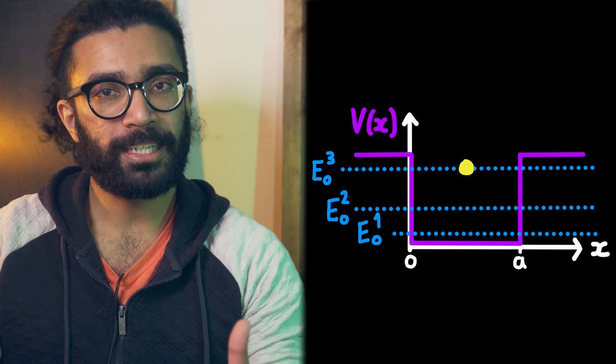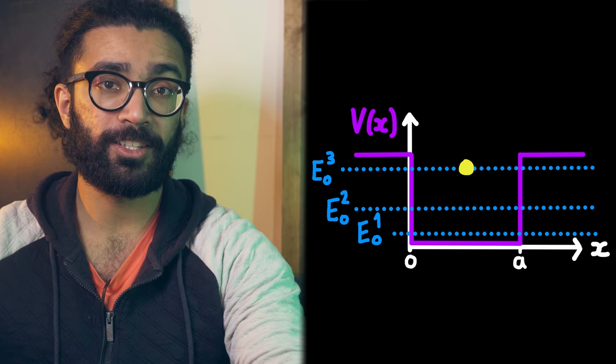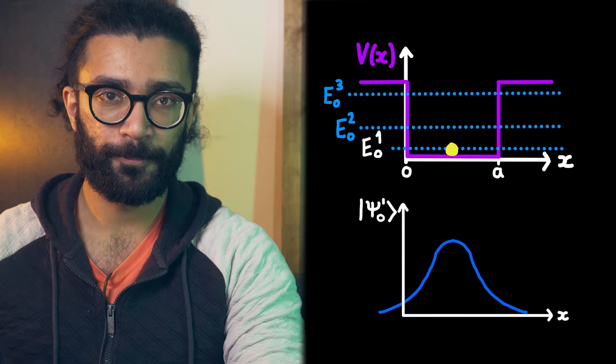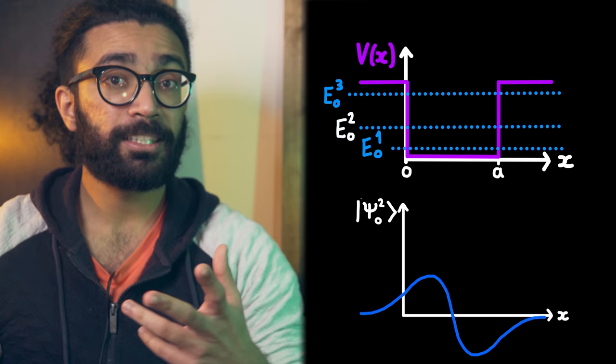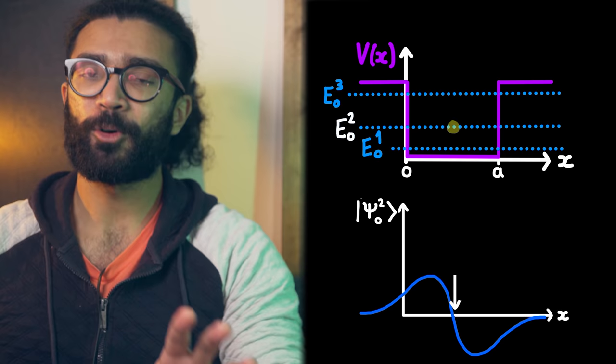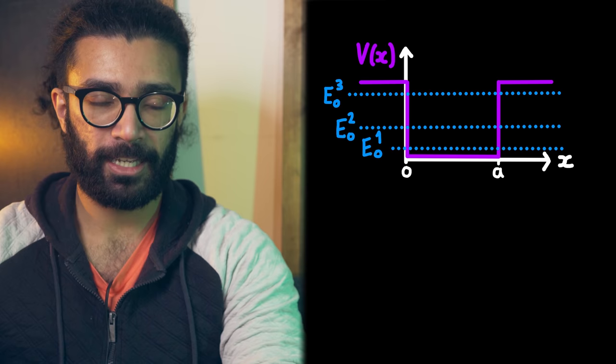Corresponding to each of these energy levels is a wave function. For a particle like this, the wave function tells us where in space we are most likely to find our particle. For the lowest energy level, the wave function might look like this, meaning the particle is most likely to be found in the middle of the potential well. For the next energy level up, the wave function might look like this, meaning the particle is most likely to be found here or here, but absolutely will not be found at the very centre of the well.